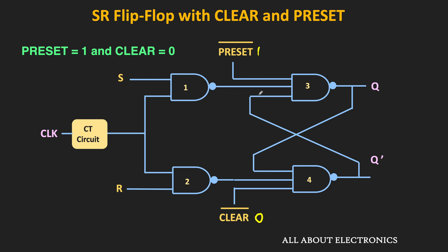When the clear input is 0, the output of the fourth NAND gate will become 1. But whether Q is 0 or not depends on the output of the first NAND gate, because Q' is 1 and the preset is also 1 — so two inputs of the third NAND gate are already 1. But to get the output of the third NAND gate as 0, the output of the first NAND gate must also be 1. Once again, that depends on the clock signal and the S input. So whenever the clear input is low, we also need to ensure that the output of the first NAND gate is equal to 1.